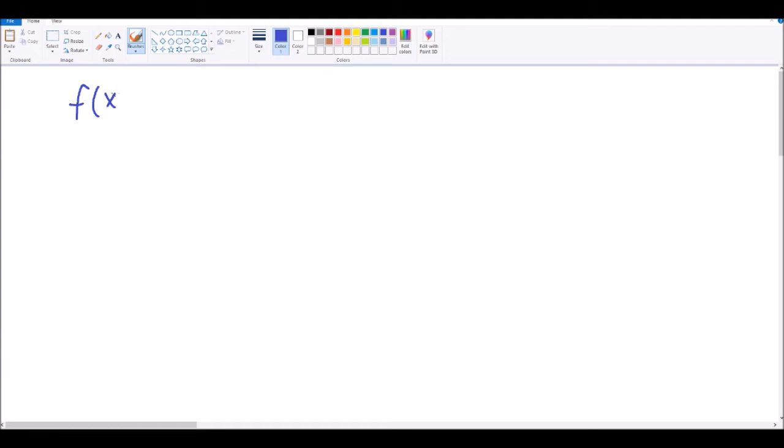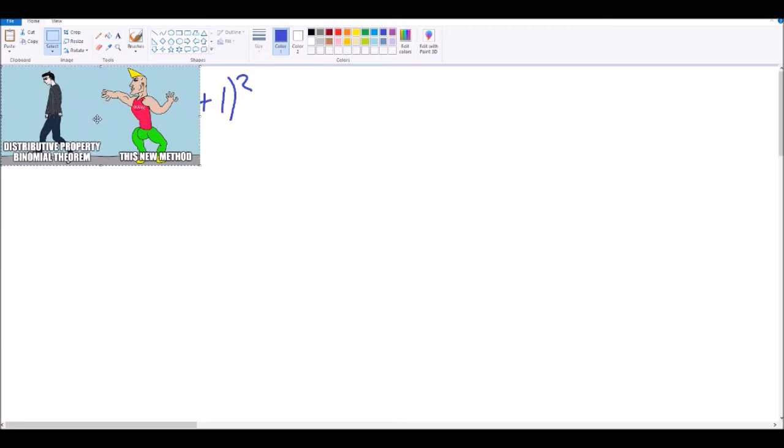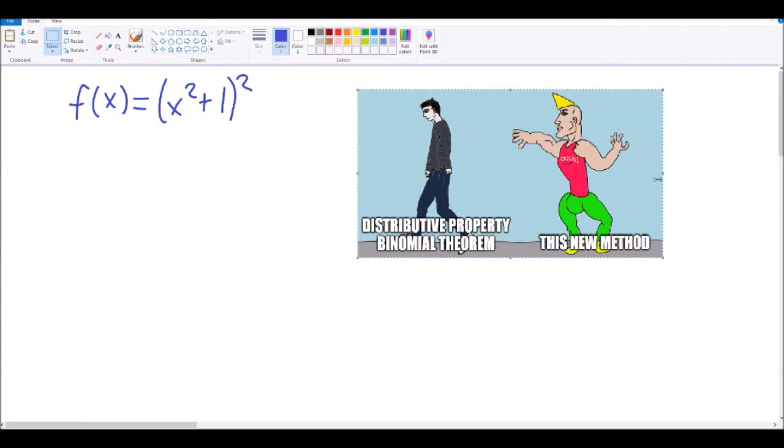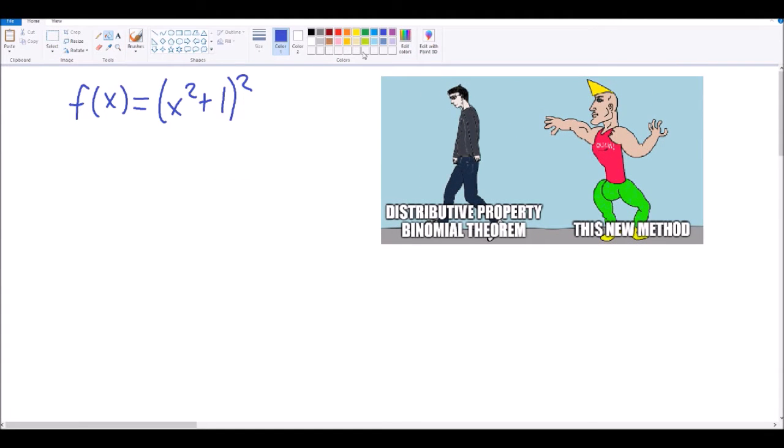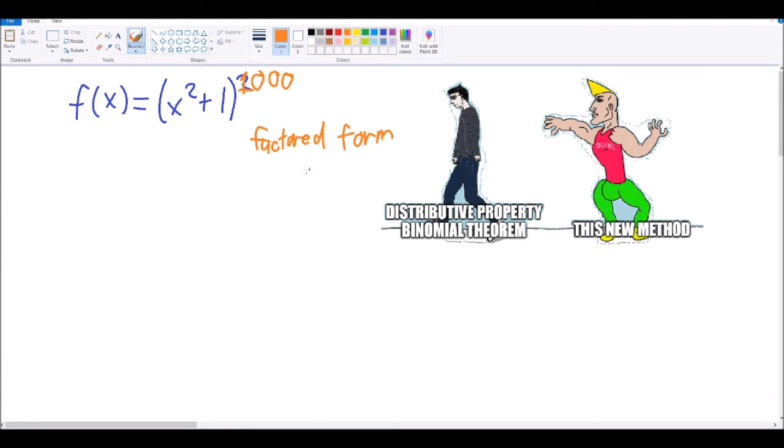Let's say we have the function x squared plus 1 all that squared. Now, we could just use the distributive property to simplify and then take the derivative, but what if that squared was actually to the 1000th power? Sure, the binomial theorem speeds up the expansion significantly, but I don't want to have to do that. Maybe a derivative in factored form like this is more convenient. Let's see what the limit has to say.